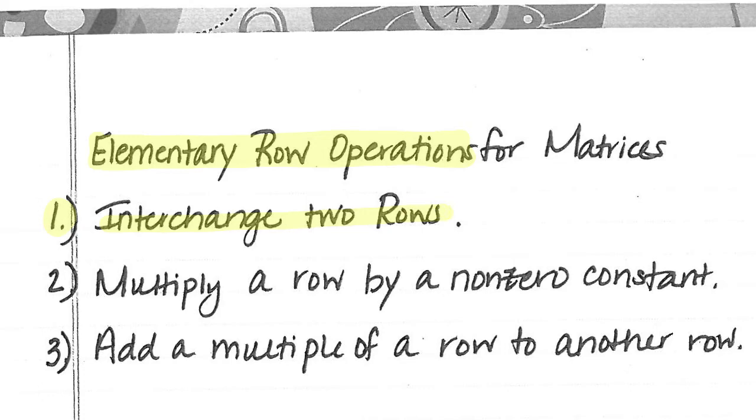Number 2, you can multiply a row, 1 row, by a non-zero constant. I want to multiply everything by 2. Number 3, you can add a multiple of a row to another row. Well, that sounds like a lot, and we'll see what they're talking about very soon.